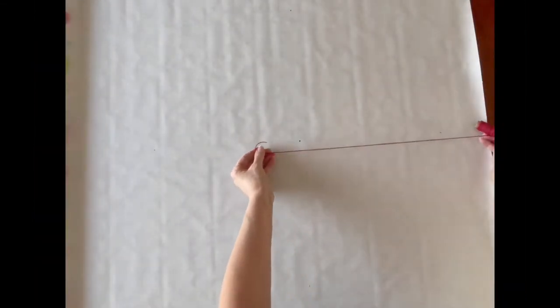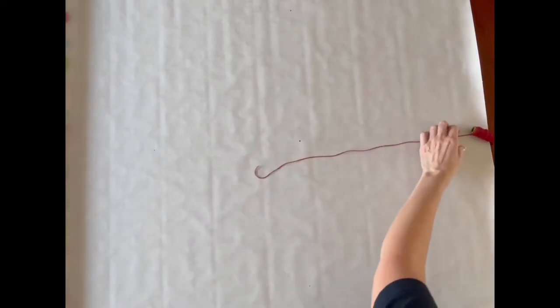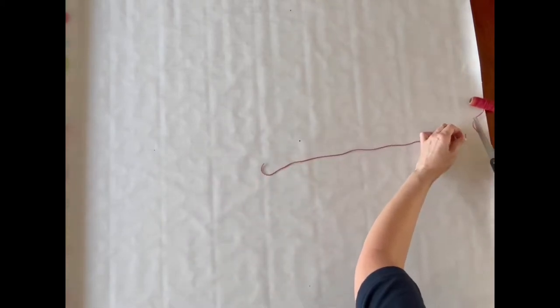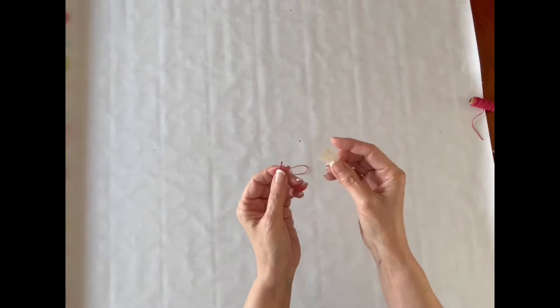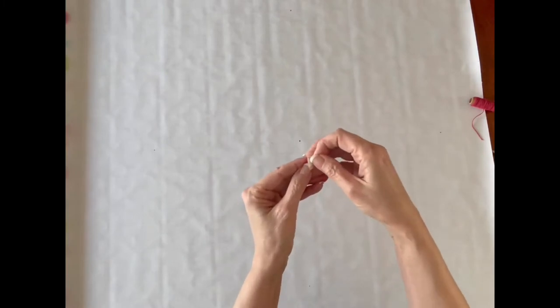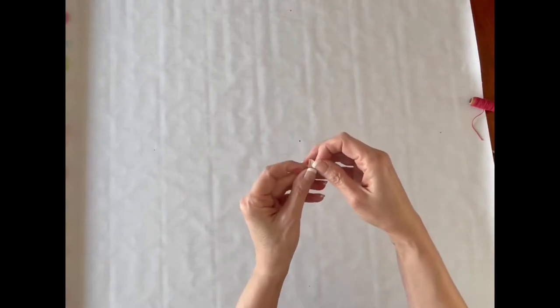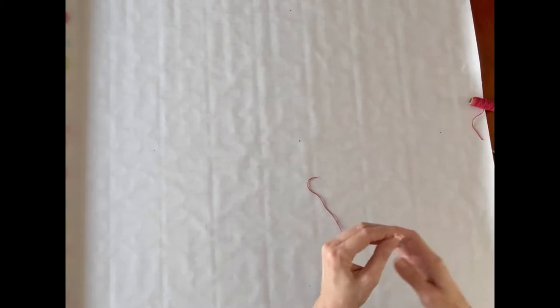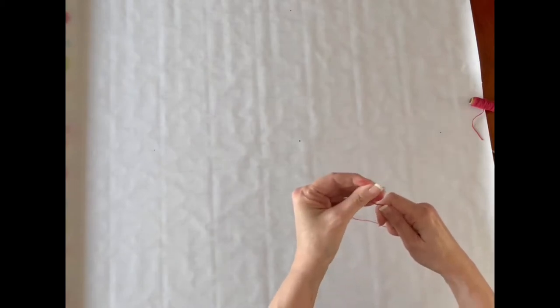Cut a piece of string or twine roughly 15 inches. Place a piece of tape on the end to keep it from unraveling. Roll it around a little bit until it has a sharp point. Using a toothpick or a needle, place a hole in the center dot that you made.